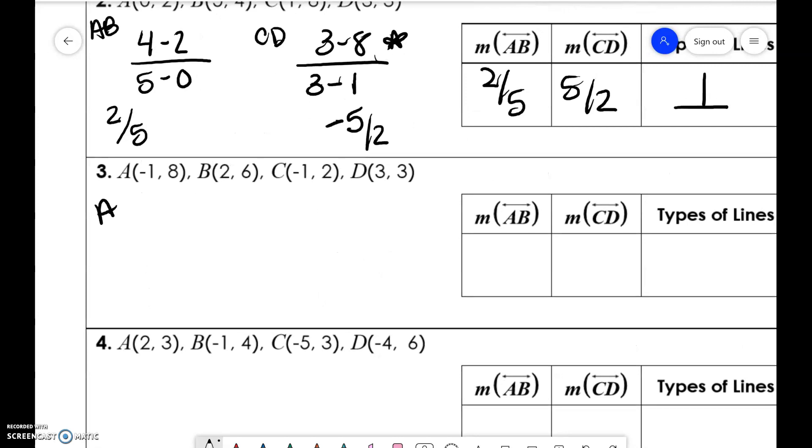AB, 6 minus 8, 2 plus 1, so 6 minus 8 is negative 2, 2 plus 1 is 3. CD is 3 minus 2 and 3 plus 1, so 3 minus 2 is 1, and 3 plus 1 is 4. We have negative 2 over 3 and 1 fourth. There's no relationship between these, so this is none.